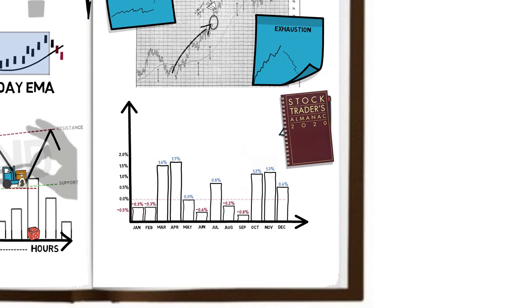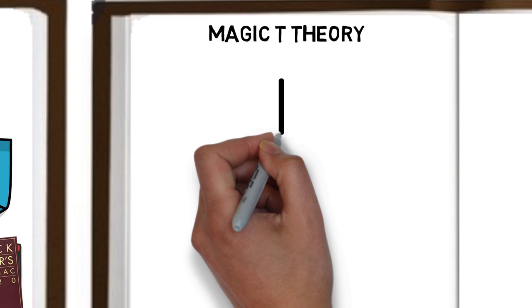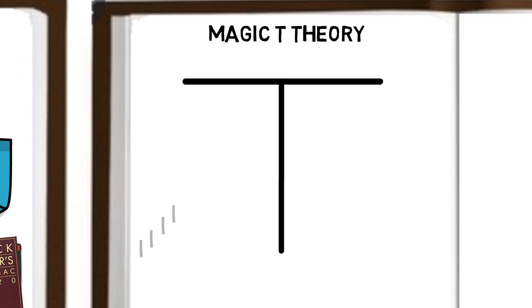Another interesting concept Schwartz refers to is the magic T theory, which he said was key to his methodology. Named the T due to its shape and the equal distance on the left and right side. Created by Terence Laundry, the theory suggests that if the market has, for example, spent six months underperforming, then it is likely the market will spend the next six months outperforming. The theory can be used against any time frame.